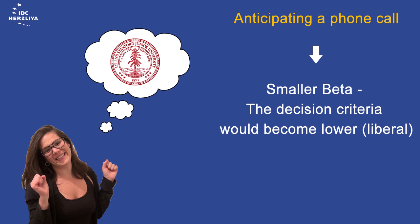The beta will become smaller. The decision criteria will become lower. We can assume more false alarm, but more hits.